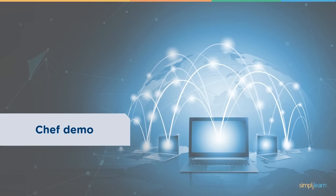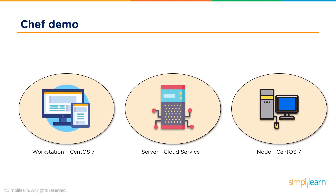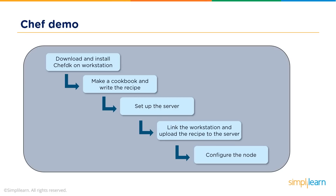Now we reach the hands-on demo. We'll use two virtual boxes, both CentOS 7 — one as a workstation and one as a node. The server will be used as a service on the cloud. The steps are: download and install Chef DK on the workstation, create an empty cookbook and write a recipe, set up the cloud server profile, link the workstation to the server, upload the recipe, and finally have the nodes download the cookbooks and configure themselves.